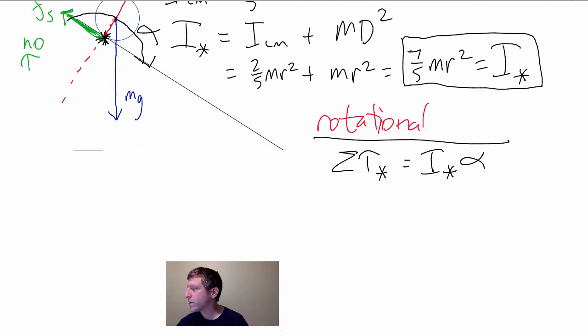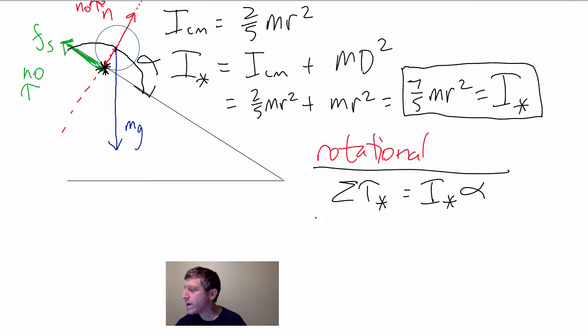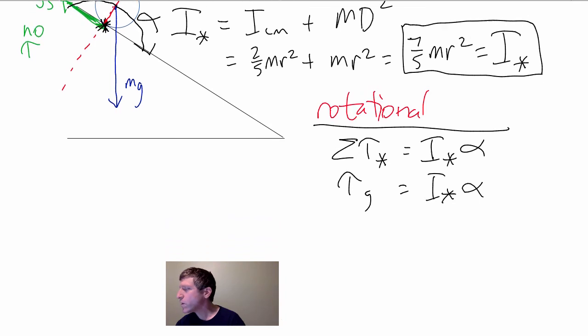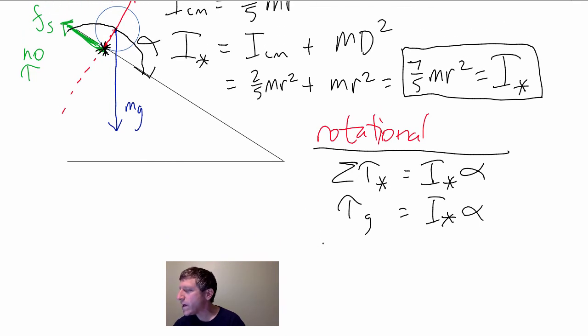So, let's go ahead and figure out what the torque is. Torque, the only force that's exerting a torque is the force of gravity. So, it's just going to be the torque of gravity equals I about the star axis times alpha. And what is the torque of gravity? Well, it's going to be the R cross F of gravity equals I star alpha.